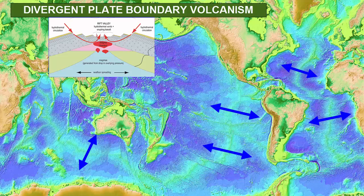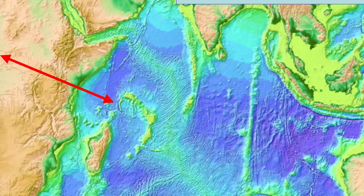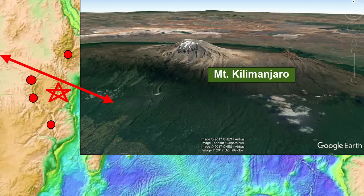Occasionally, we see divergent plate boundaries that are still splitting apart continent and haven't yet developed low-lying ocean basins. An example is in the East African Rift Valley. In such cases, the rate of spreading is so slow that lavas can pile up in a single location, and we can see volcanoes forming above the surface, such as the famous Mount Kilimanjaro.